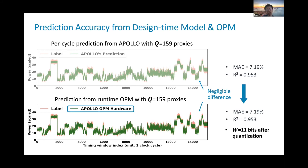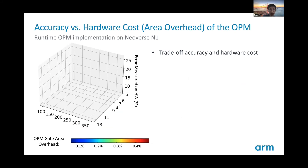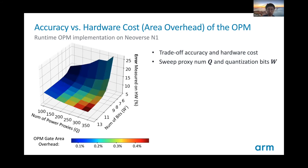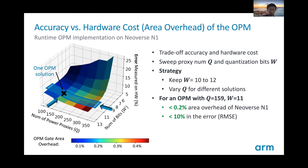There is still a trade-off between accuracy and hardware implementation cost, and we have a study on this. We measure the power estimation accuracy (error) on the z-axis and use color to indicate hardware cost measured in area overhead. We study the trade-off by choosing different proxy numbers Q and quantization bits W. Our strategy is to keep the quantization bits W equal to 10 to 12 bits and vary Q for different solutions. For example, for an OPM solution with Q equals 159 and W equals 11, the OPM achieves less than 0.2% area overhead of the CPU and less than 10% error.